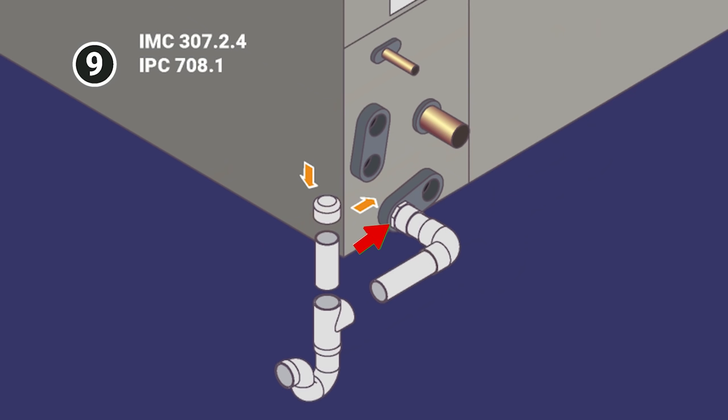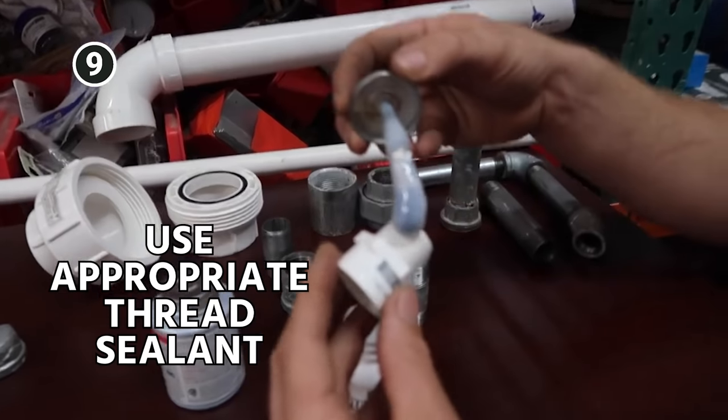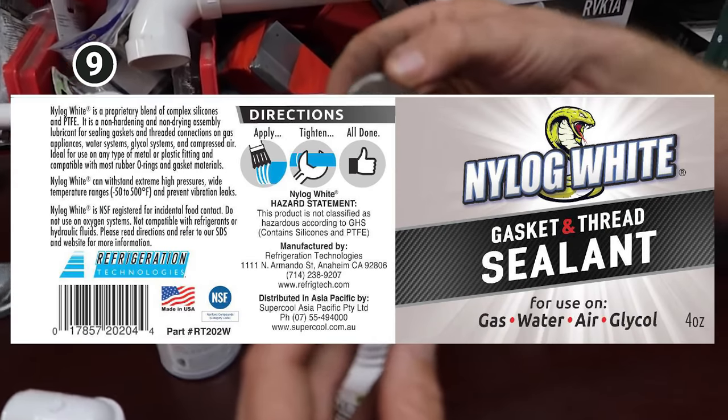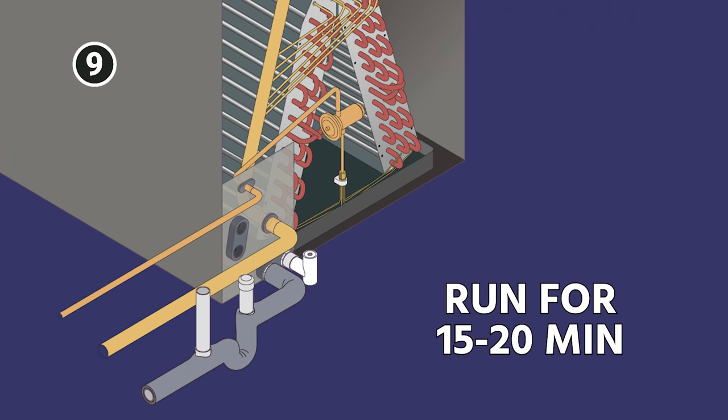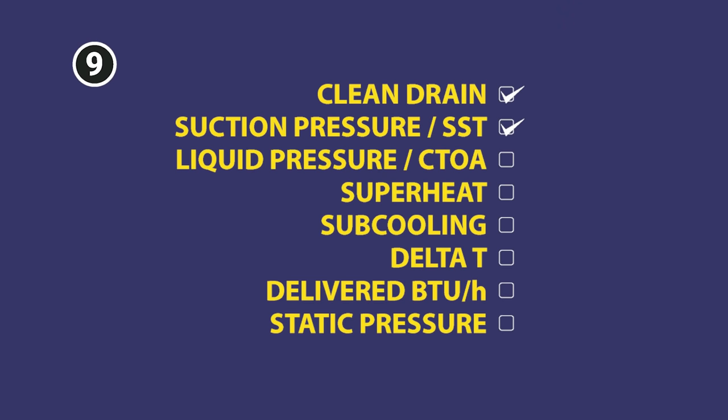Also, when you do reattach your drain line to the evaporator coil, I forgot to mention that, you want to use a good pipe dope such as Nilog White to make sure that you get a good threaded seal into that drain pan. Once you let it run 15, 20 minutes, then go ahead and measure your suction pressure, otherwise known as your suction saturation temperature, because it's really the temperature you're looking for. Your liquid pressure, which shows you your condensing temperature over ambient. Superheat, subcooling, delta T, and then to even be more thorough, do your delivered BTUs per hour, which is easy to do with MeasureQuick, and measure your static pressure.